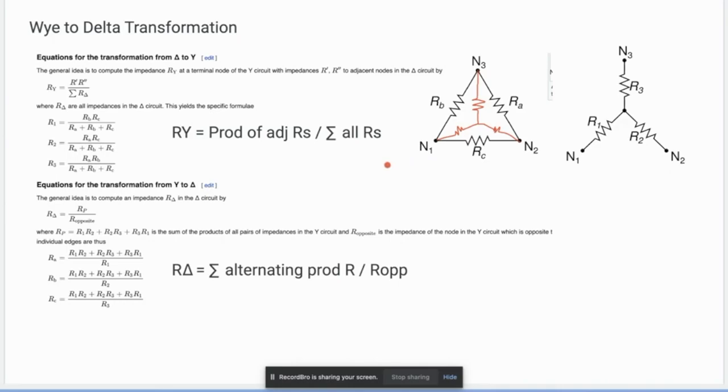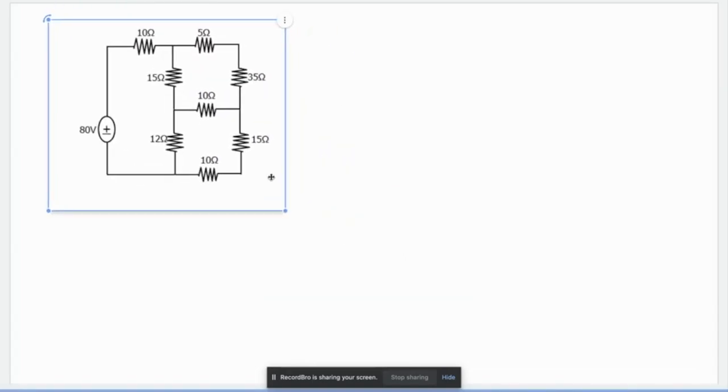So if this one, if you want the Y, magkakaroon nyo na like this, one, two, then three. So for you to know the delta equivalent of that, for this that will be the sum of the alternating product, meaning R2 times R3 plus R3 times R1 plus R1 times R2 divided by the opposite. That is the conversion of transformation of Y to Delta and Delta to Y.